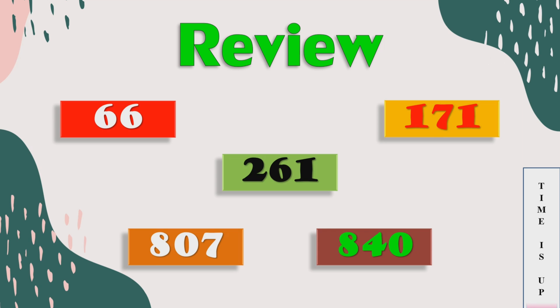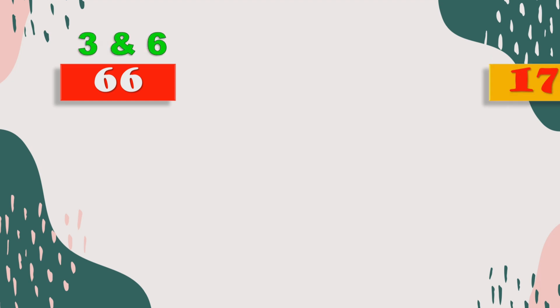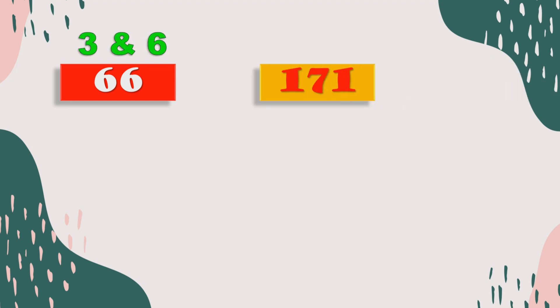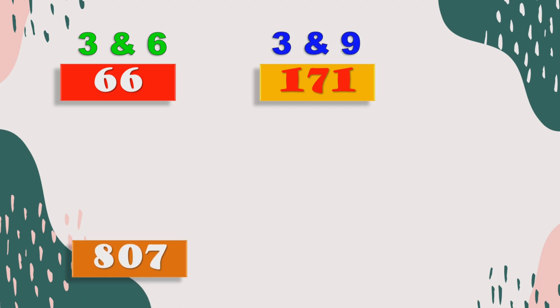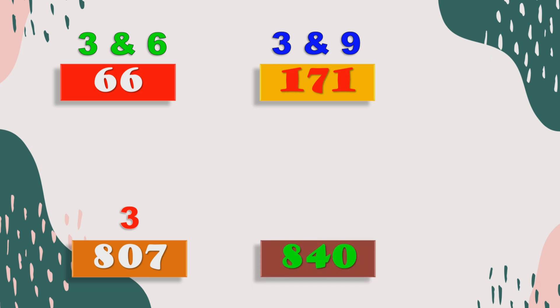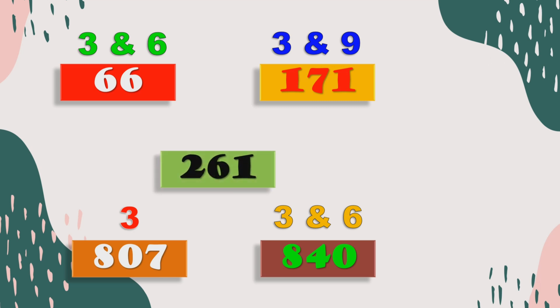Let's go check your work. For 66, we have 3 and 6. For 171, it is divisible by 3 and 9. For 807, it is divisible by 3. For 840, it is divisible by 3 and 6. And for number 5, that is 261, it is divisible by 3 and 9.